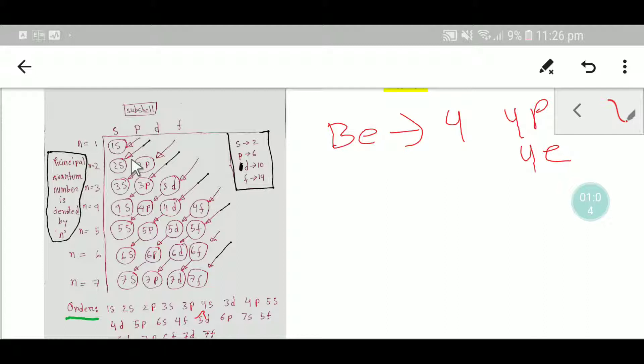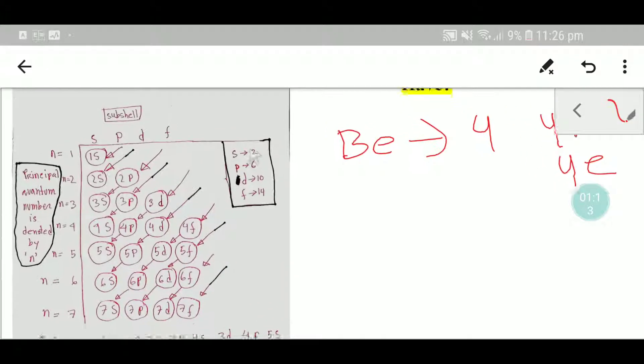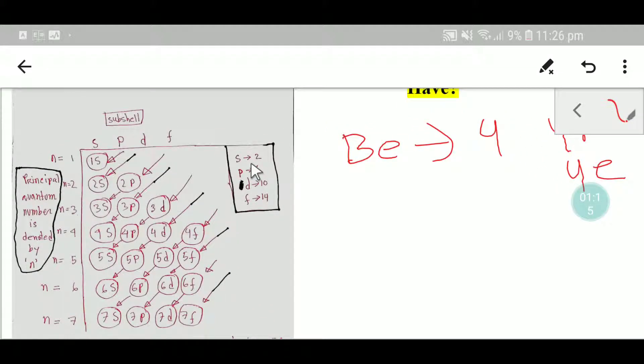Let's get started. We have 4 electrons. The s subshell can take maximum 2, p subshell can take maximum 6, d subshell can take maximum 10, and f subshell can take maximum 14.